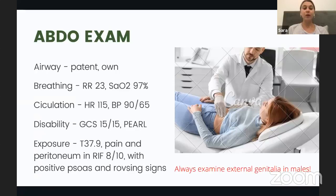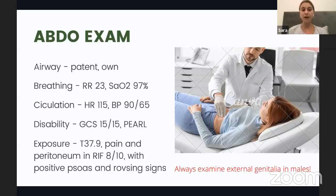Going back to our patient, we do the ABCDE assessment. The airway is maintained. She is breathing slightly fast with a respiratory rate of 23 and oxygen saturations of 97%. Her heart rate is 115, which is raised, and blood pressure is 90 over 65. Her GCS is 15 out of 15, pupils are normal. She has a low-grade fever. There is significant pain and peritonism in the right iliac fossa, which she describes as 8 out of 10. The psoas and Rovsing's signs are positive.